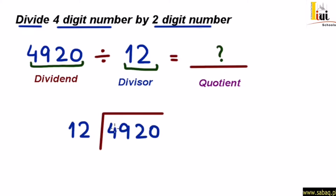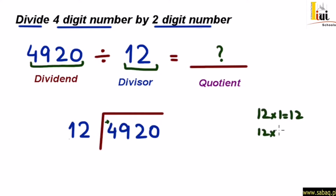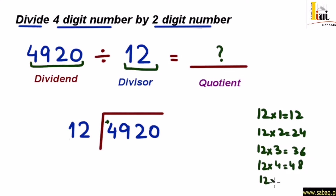Now, what do we do? We start from the left-hand side. So here we have 4, 9, 2 and 0. We start with minimum 2 digits. We recite the 12 times table: 12 ones are 12, 12 twos are 24, 12 threes are 36, 12 fours are 48, 12 fives are 60.